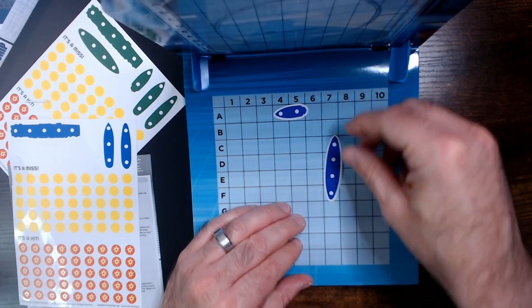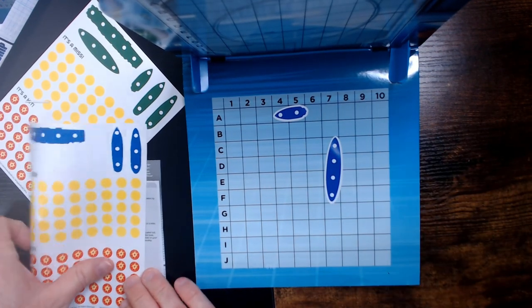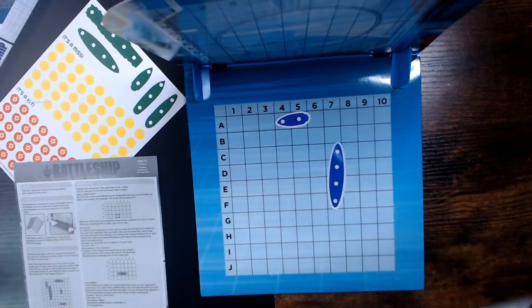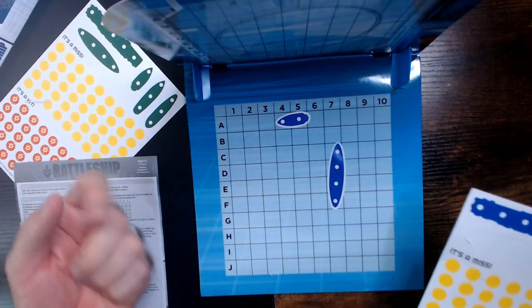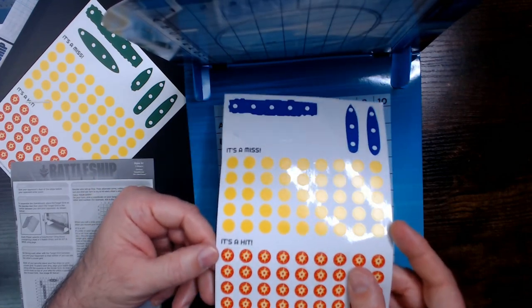So we have a couple ships on. And of course the game is you would call out A4, you look here, it's a hit, so you grab one of the hit markers.